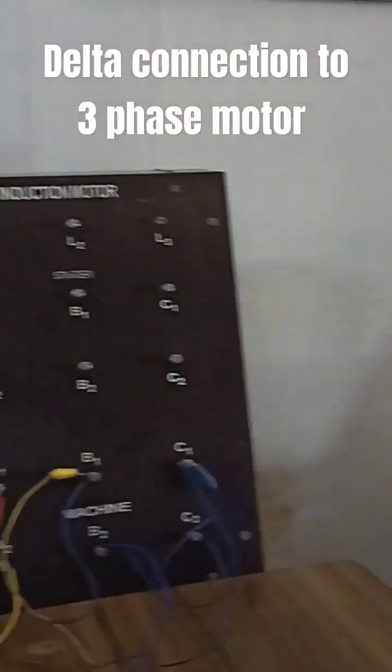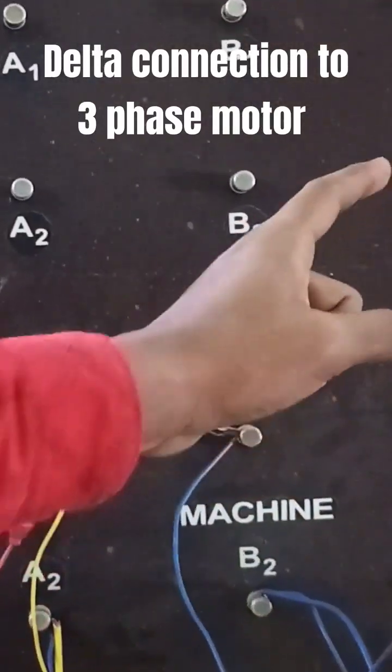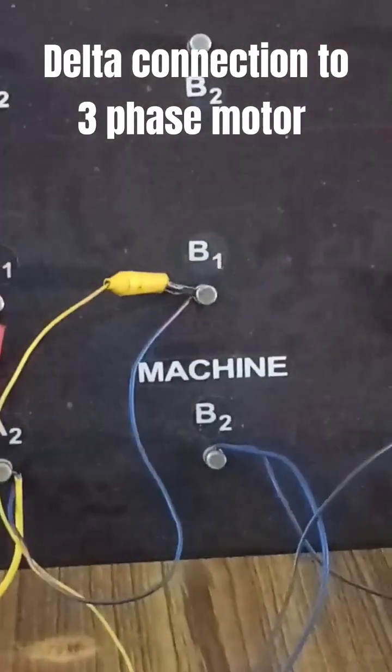So here you can see A1, A2 is one set of winding, B1, B2 is another set of winding, C1, C2 is another set of winding.